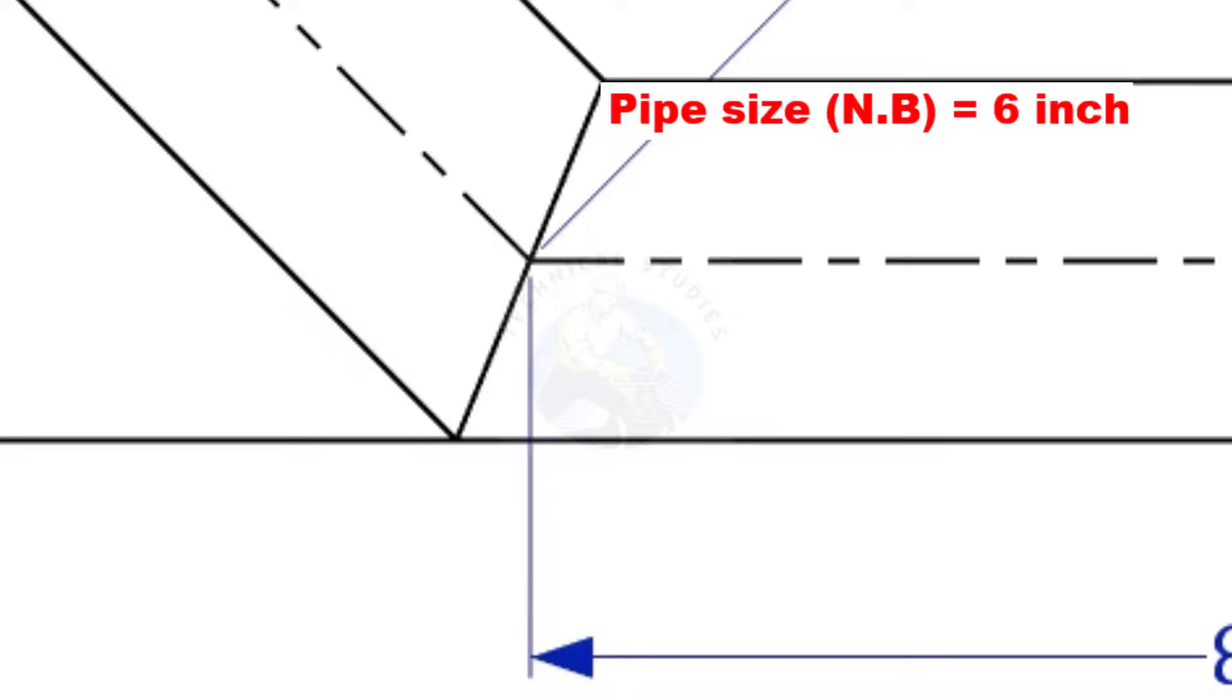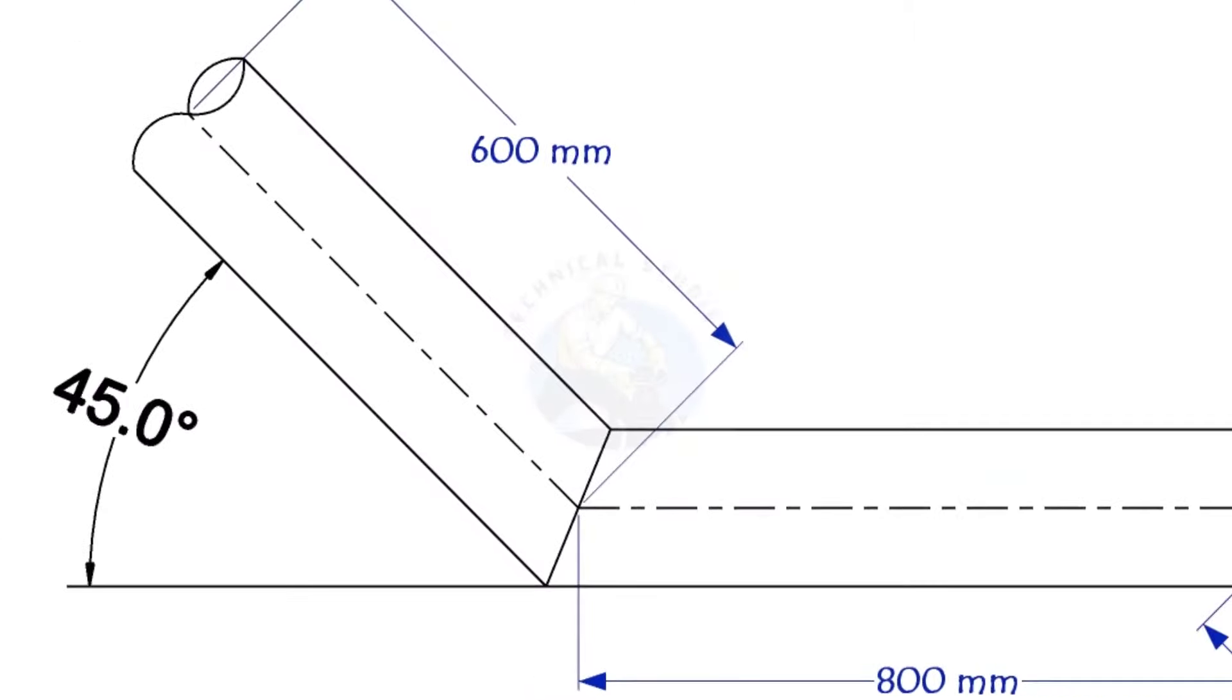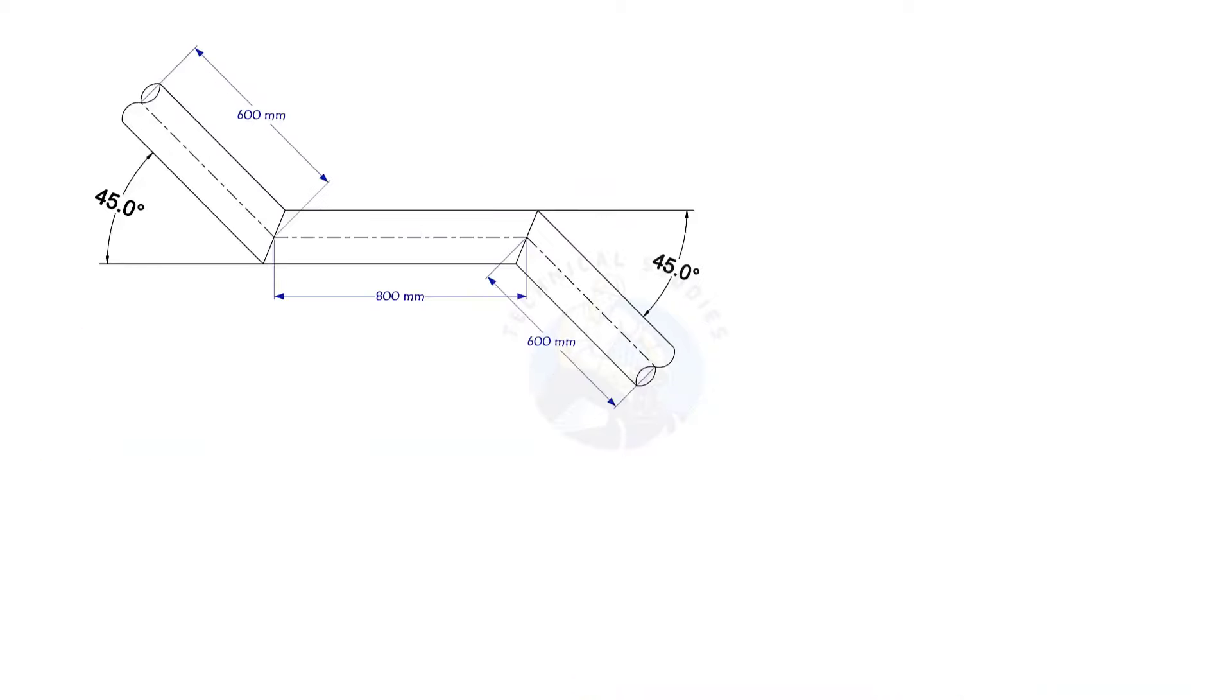In this offset, the nominal diameter of the pipe is 6 inch. The angle of the miter is 45 degrees. This method is suitable for cutback of any degree. The outside diameter of a 6 inch pipe is 168.3 millimeters.